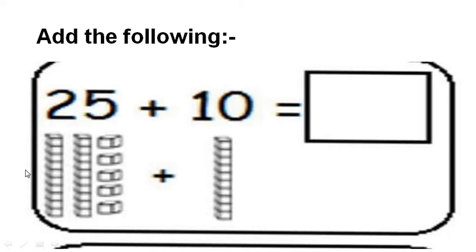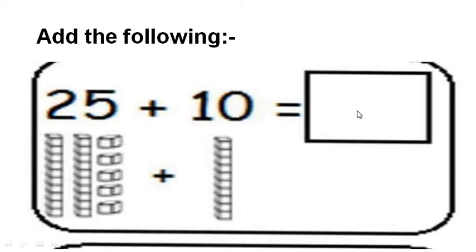Now this is the blocks of 25. The sum is 25 plus 10. We have to add 10 more to 25, and for that we have to start counting just after 25: 26, 27, 28, 29, 30, 31, 32, 33, 34, and 35. The answer is 35.